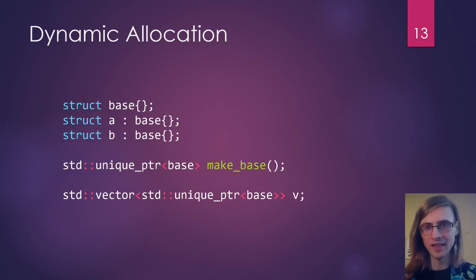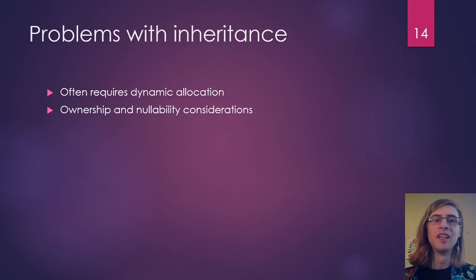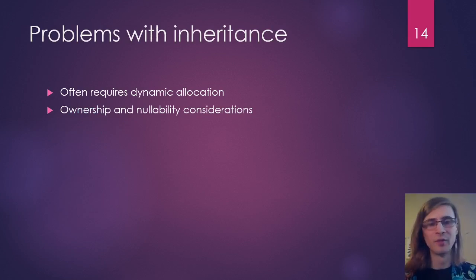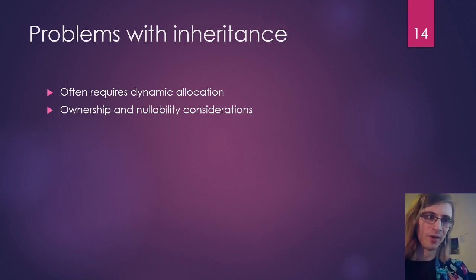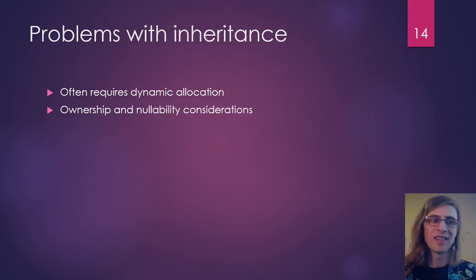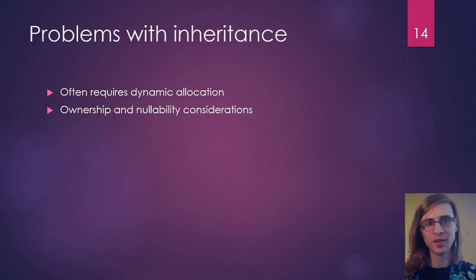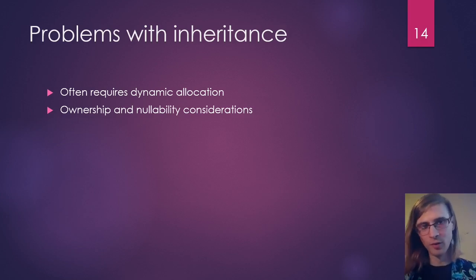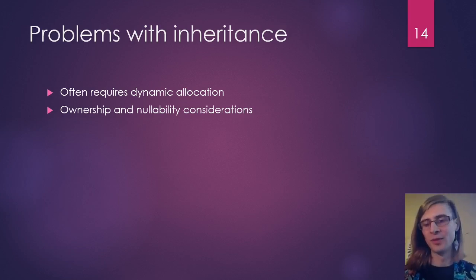As I alluded to, you also get the problem of ownership and nullability. We're usually returning unique pointers or shared pointers, and we don't like throwing around owning raw pointers. We have to think about the ownership of this resource, and we might need to think about nullability. Sure, we're getting a unique pointer and we know what the ownership is, but can it be null? Do we have to check for this? These are all concerns we have to think about when we use inheritance.